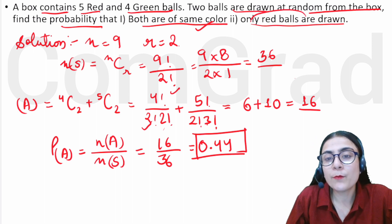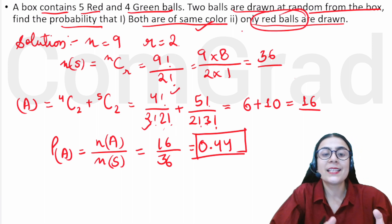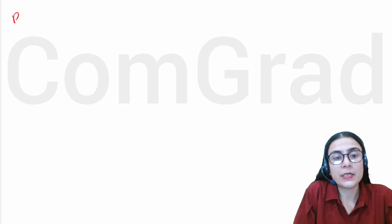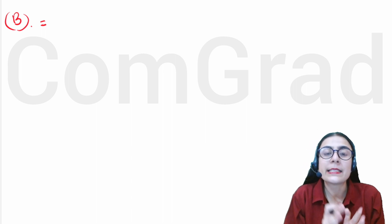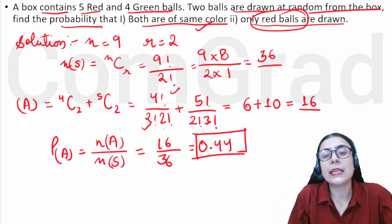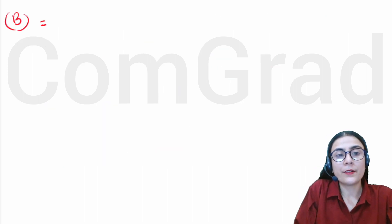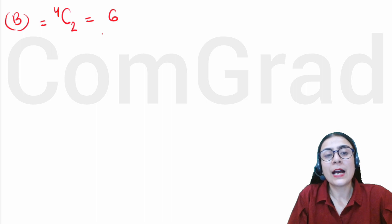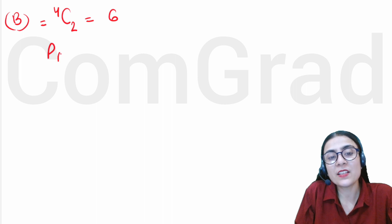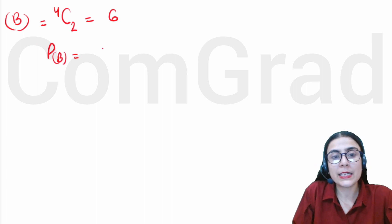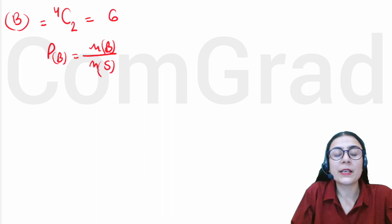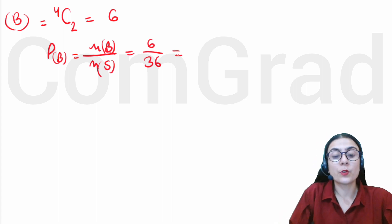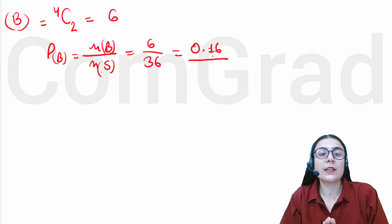For event B — only red balls are drawn — both balls must be red. Sample space remains the same at 36. The number of events = 4C2 = 6. So P(B) = number of events / number of sample space = 6 / 36 = 0.16. The second case probability is 0.16.